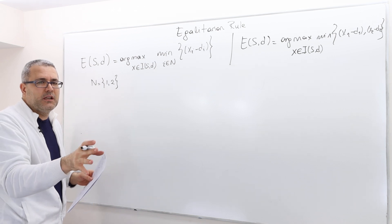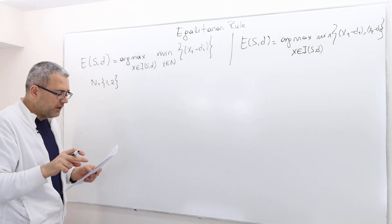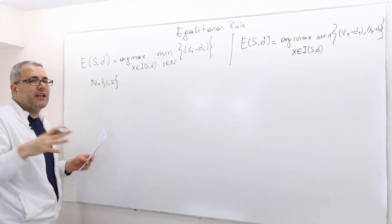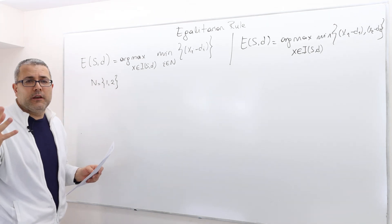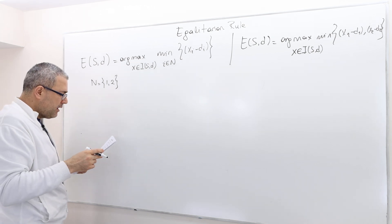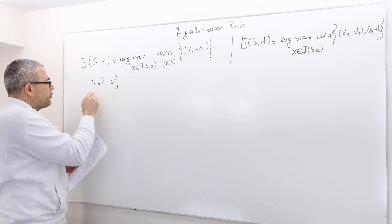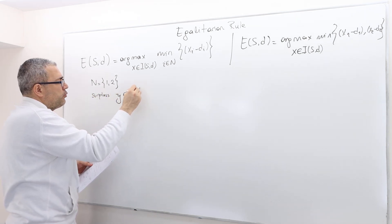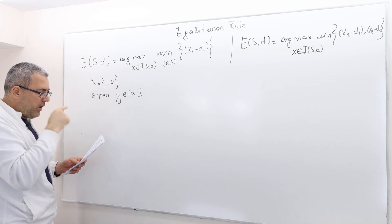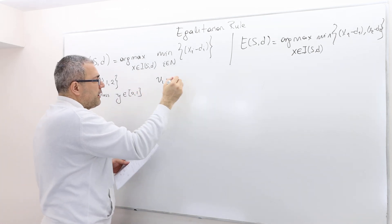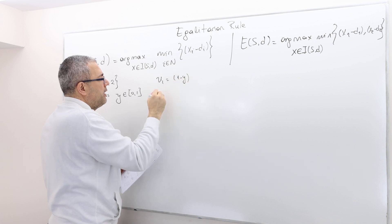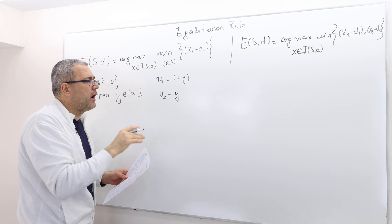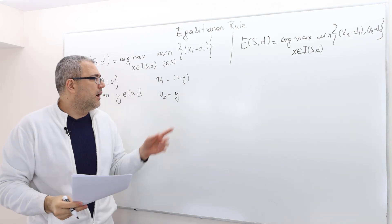I have two players negotiating to split a surplus — like a cake of size one. We normalize the size to one, so the surplus is y, something between zero and one. The utility of player one is square root of (1 minus y) and the utility of player two is square root of y.